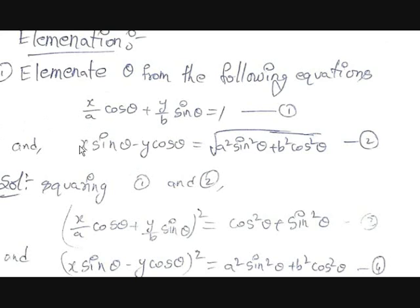And there is another equation: x·sinθ − y·cosθ = √(A²sin²θ + B²cos²θ). Now, we can perform operations on these two equations and we should result in an equation without trigonometric ratios.